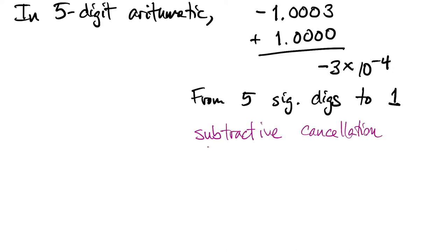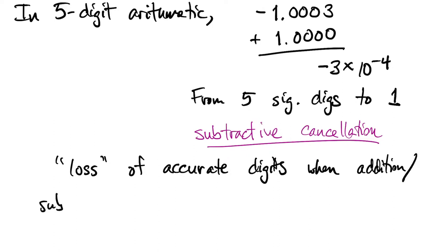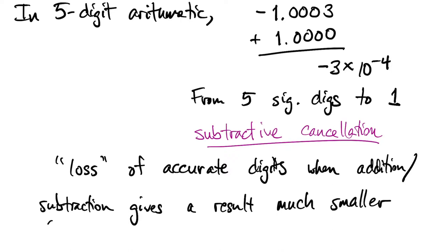And this phenomenon is called subtractive cancellation. We often refer to it casually as the loss of accurate digits in the result. Subtractive cancellation occurs whenever the result of an addition or a subtraction gives an answer which is much smaller in absolute value than the absolute values of the original operands.